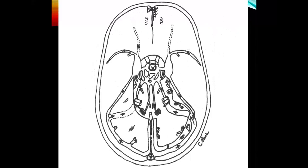Again: the confluence of sinuses, the straight sinus, and here is where the inferior sagittal sinus dumps into the straight sinus, the great vein of Galen, the transverse sinus, sigmoid sinus, jugular vein. And here we have the cavernous sinus, superior petrosal sinus, and inferior petrosal sinuses.